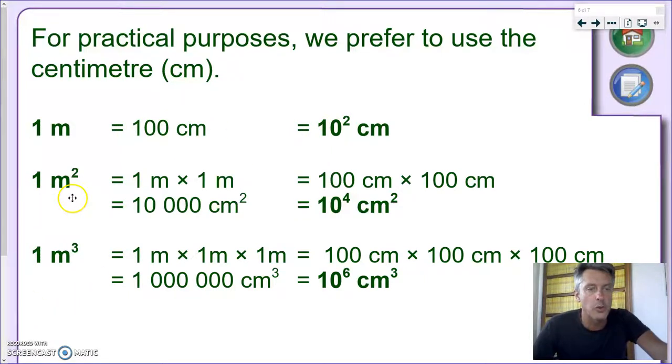But let's look now at the square meter. Now, a square meter, as I told you, means one meter times one meter. Now, every meter is made of 100 centimeters. So we can rewrite this as 100 centimeters times 100 centimeters. 100 times 100 is 10,000 square centimeters, because centimeters times centimeters is square centimeters. If we use the powers of 10, we're going to get 10 to the 4 square centimeters.